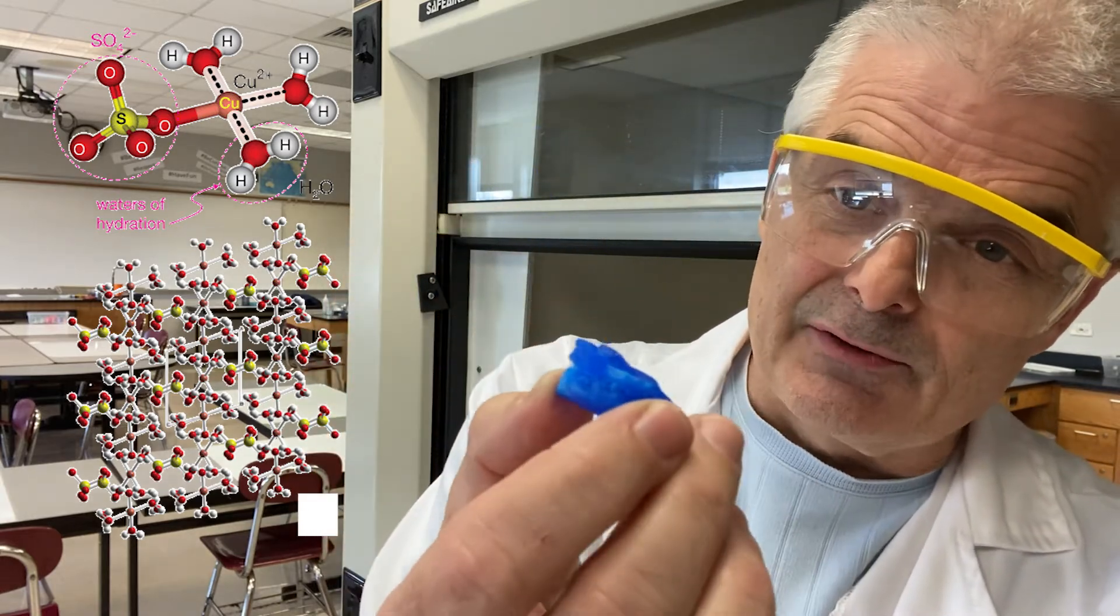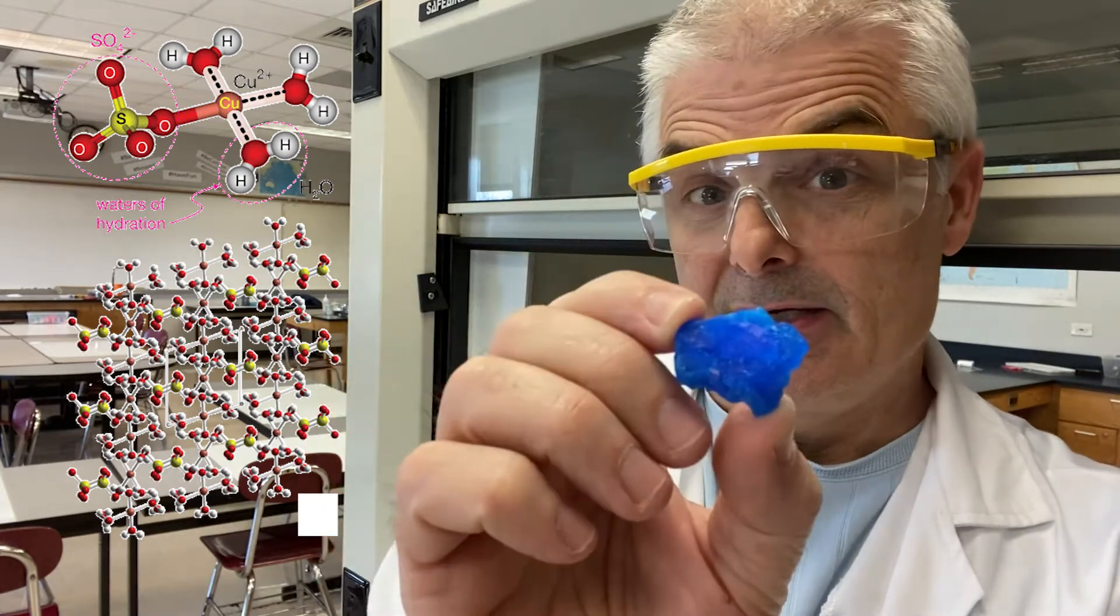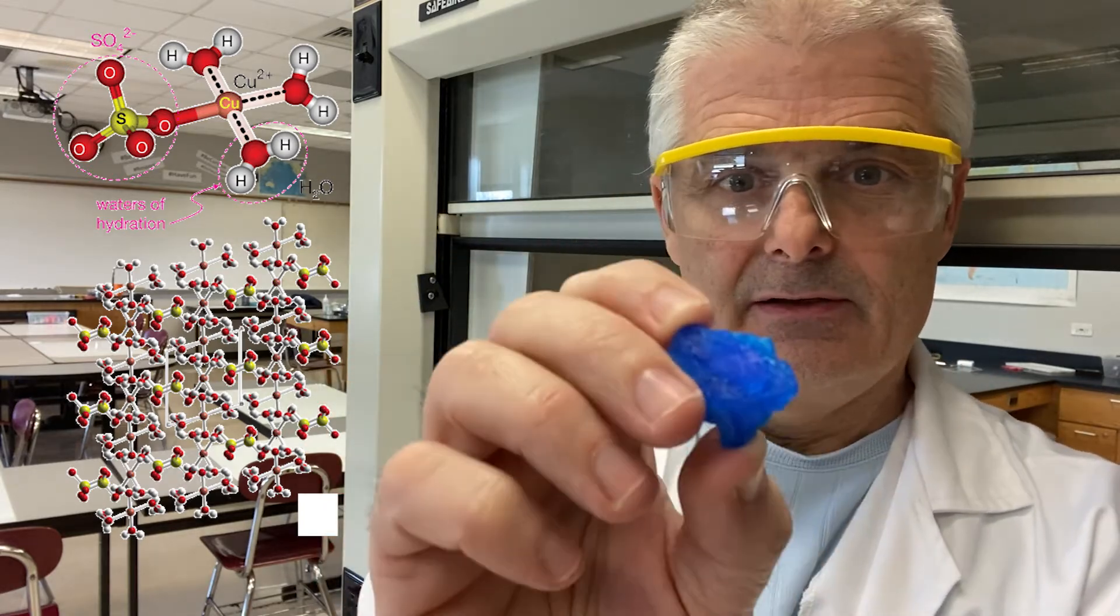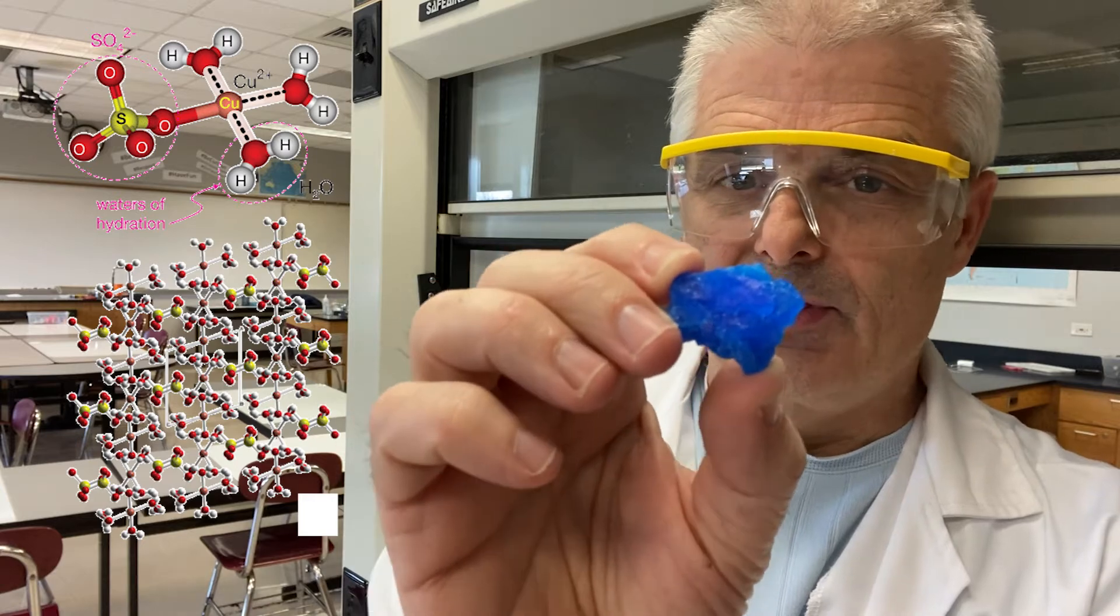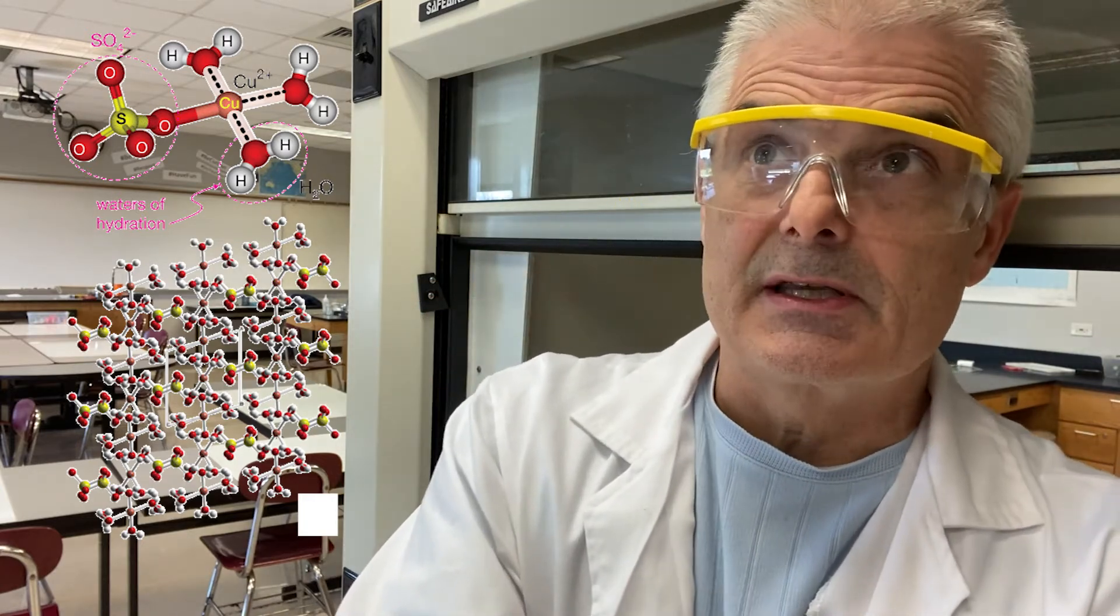This is actually an interesting compound. Copper sulfate pentahydrate is used as a fungicide. If I were to eat this, bad idea, it would cause diarrhea and all kinds of problems, really bad. Not a good thing, but it is used as a fungicide on plants, fruit trees, things of that sort.